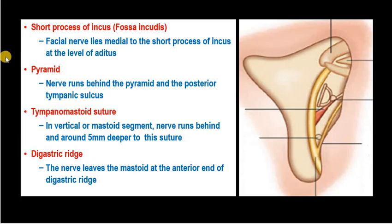From behind the pyramid, the facial nerve takes the second genu — that is the beginning of the vertical (mastoid) course of the facial nerve. The tympanic segment is sometimes called the horizontal segment, although it is not truly horizontal; it makes an angle of 55 degrees. Next is the tympanomastoid suture: the facial nerve runs behind and around 5 mm deep to the tympanomastoid suture. We can find the tympanomastoid suture during the early course of surgery for the middle ear and mastoid while elevating the tympanomeatal flap.